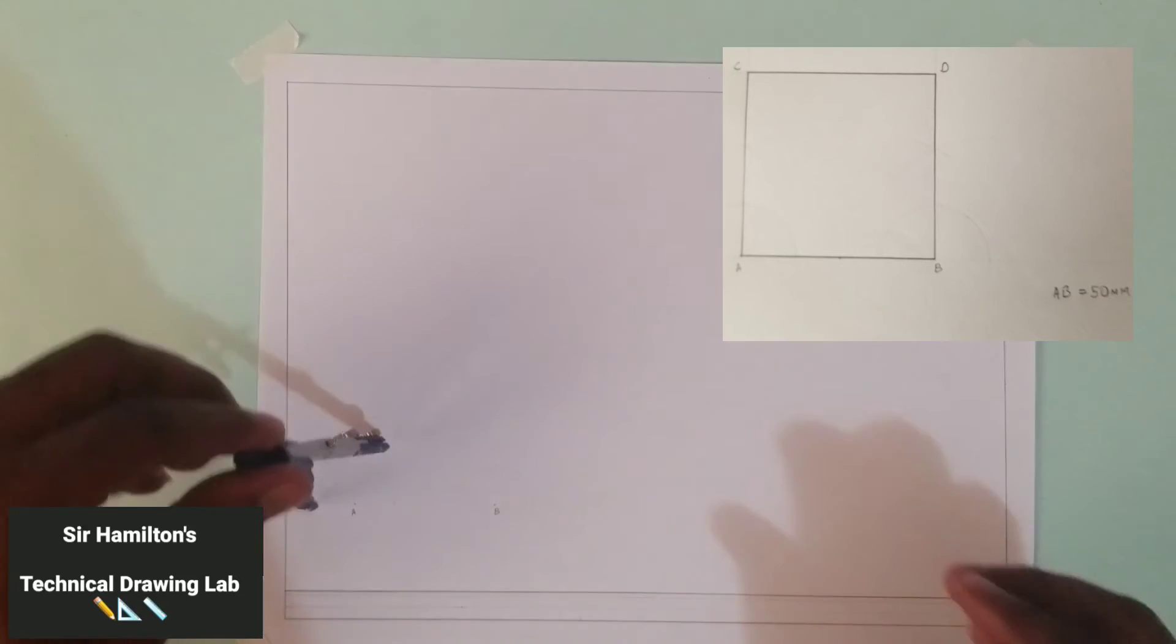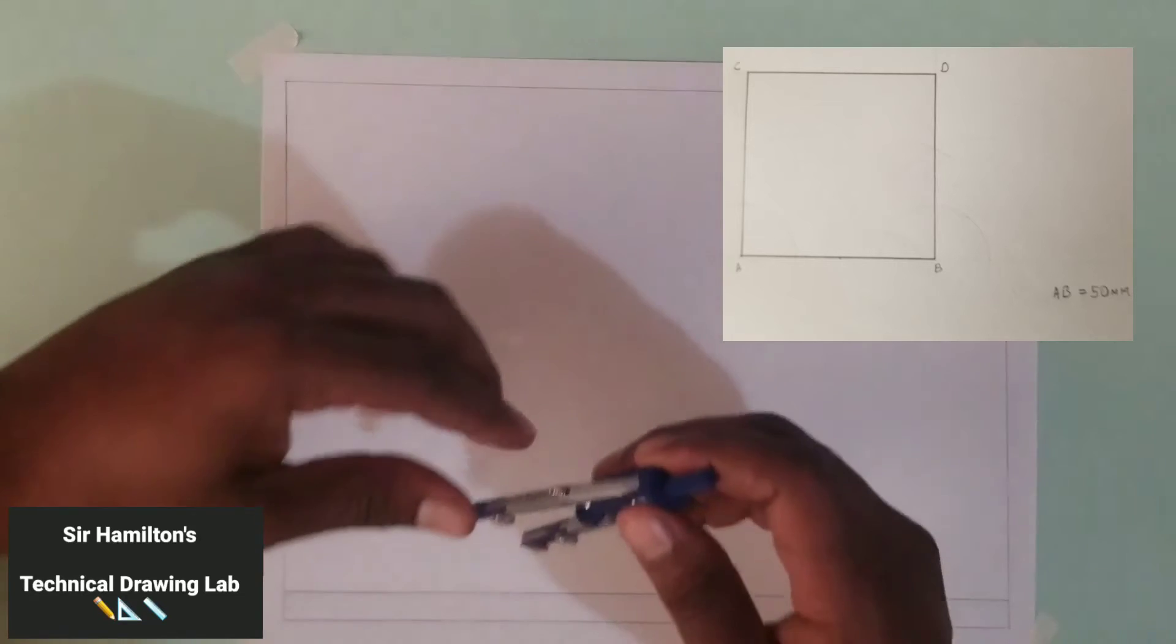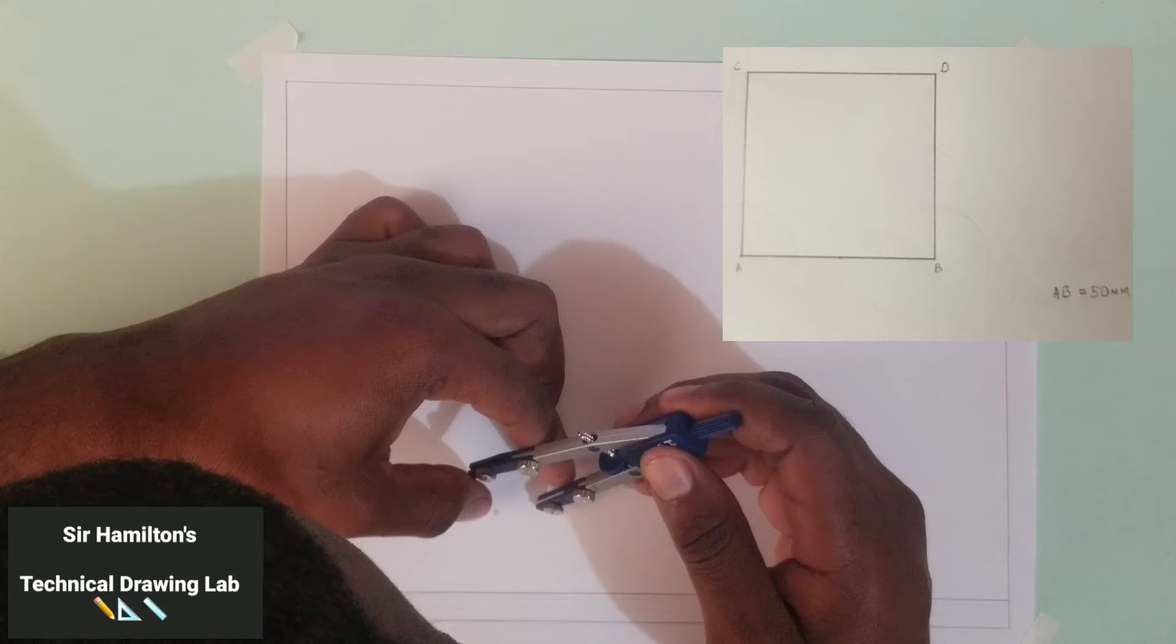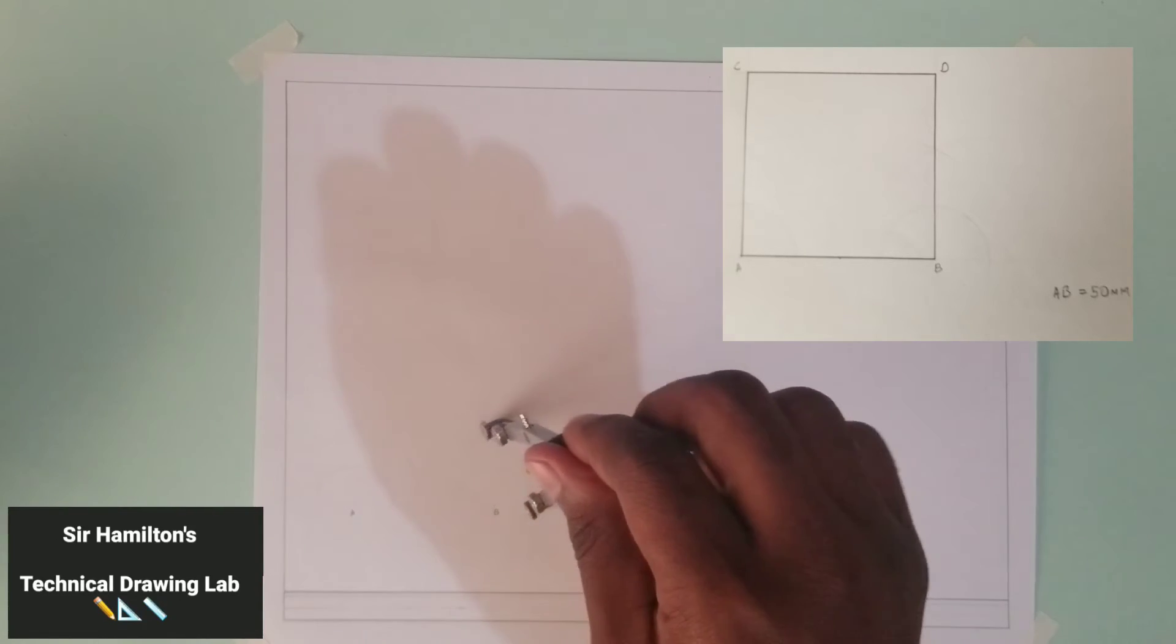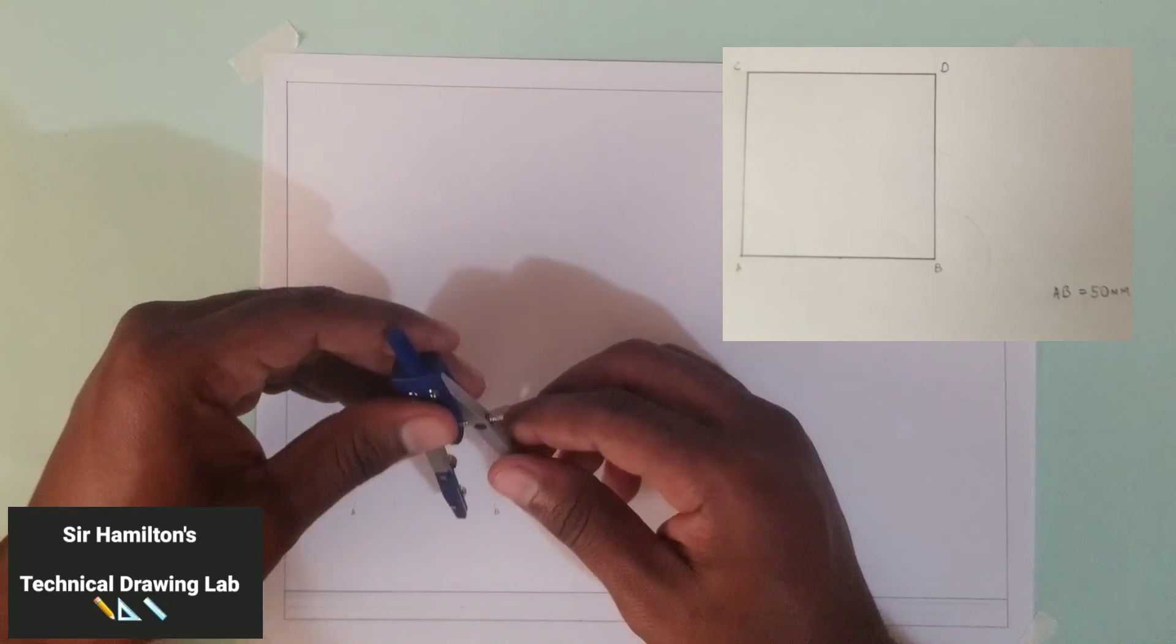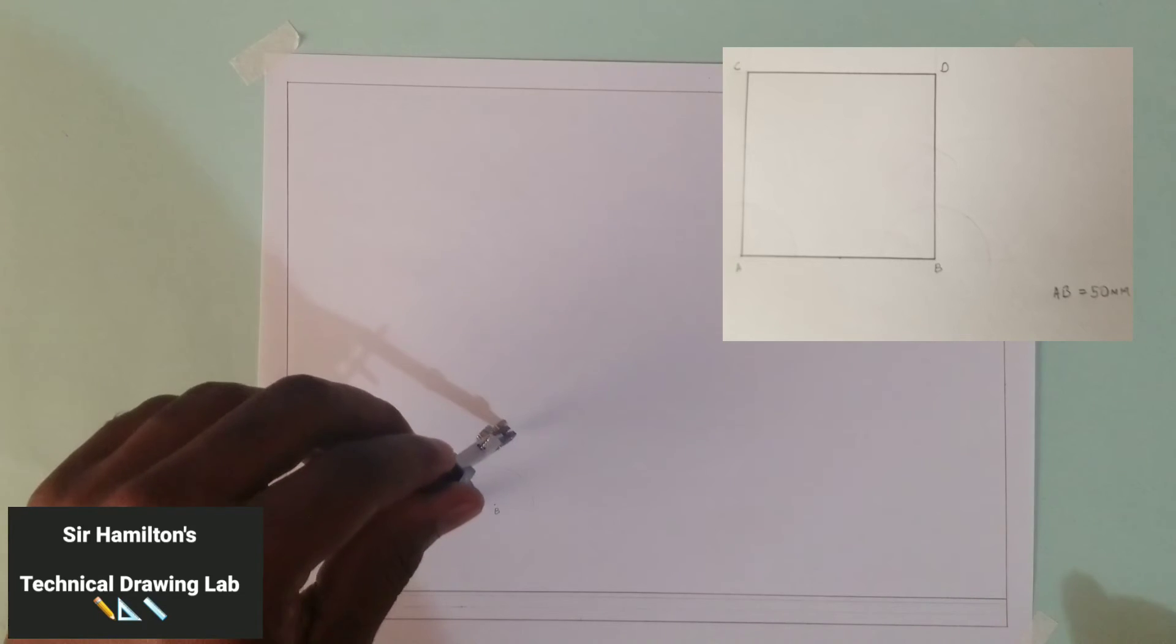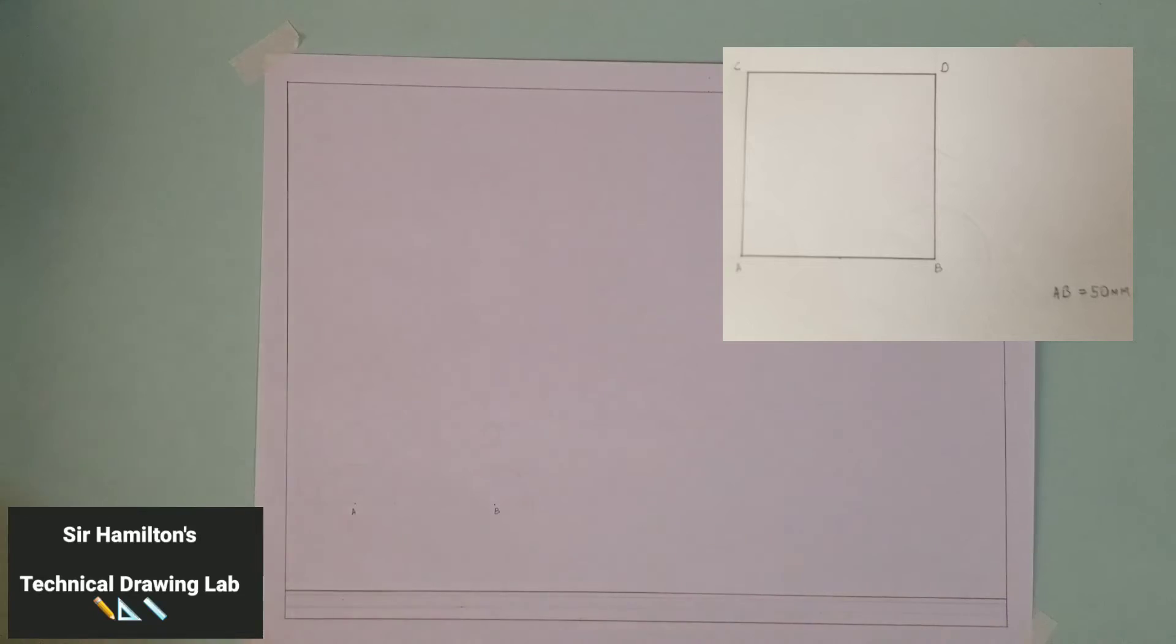Of your completed drawing, right? Compass goes here, scribe one arc, then over the other side and I scribe an arc again. Okay great, now at this point I will take my set square.